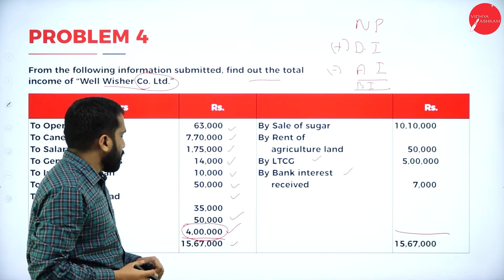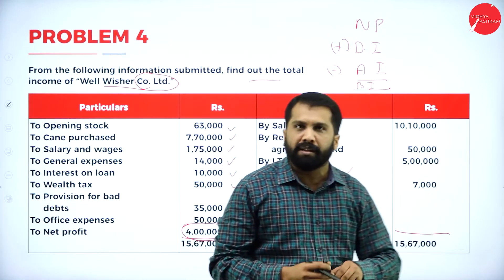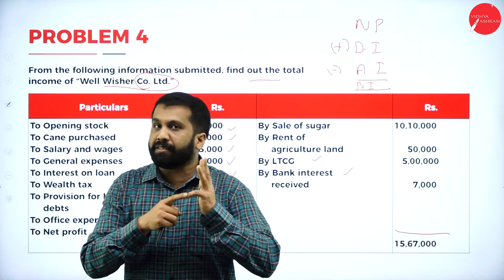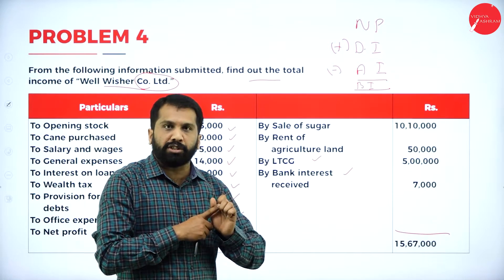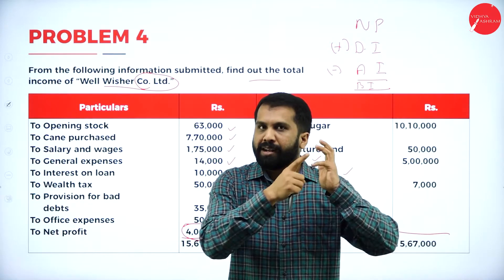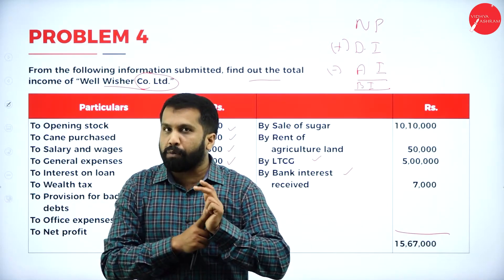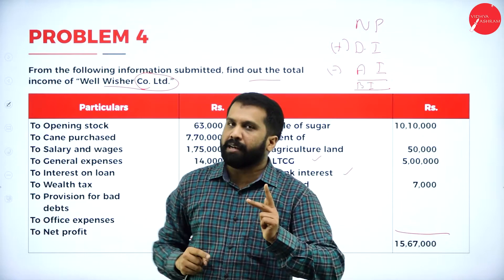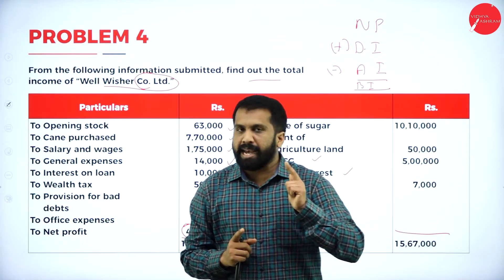Which are the disallowed items? Remember: any reserves - like general reserve or taxation reserve - any provisions such as provisions for doubtful debts or provisions for taxation. All provisions will come. Depreciation, if you have an adjustment; if it is not in the adjustment, we will not take depreciation. Also, any personal expenses.